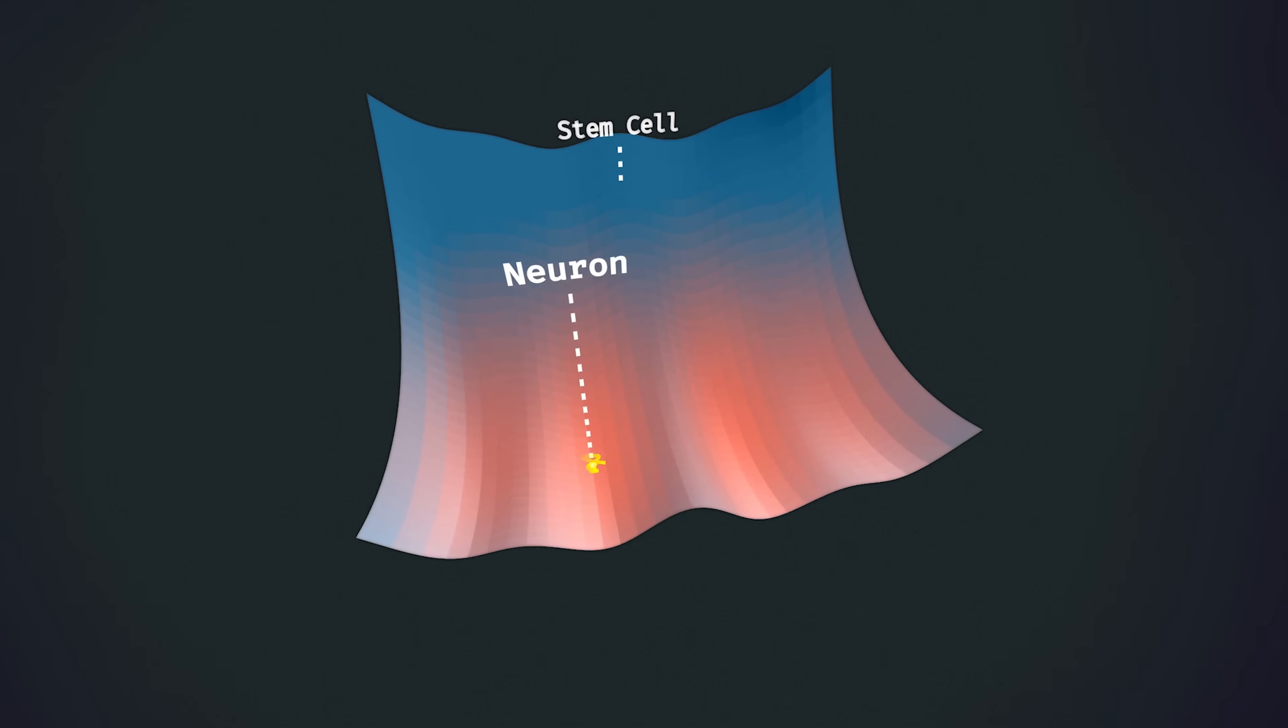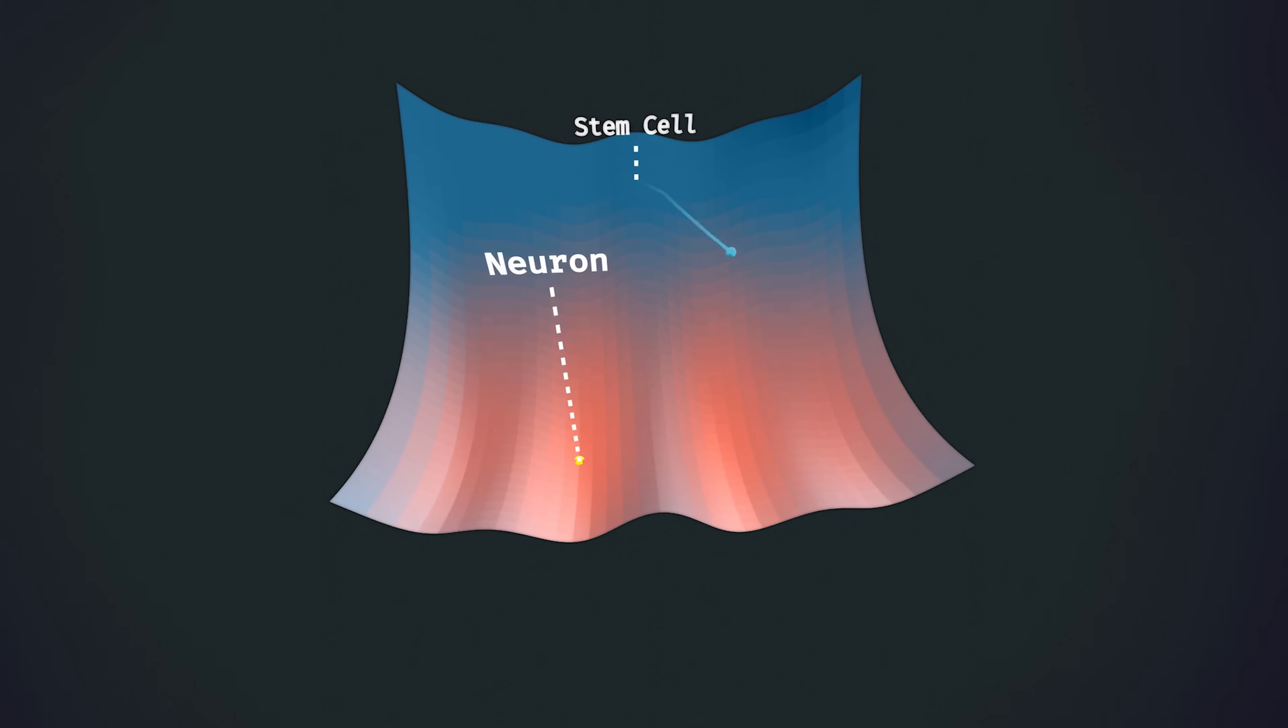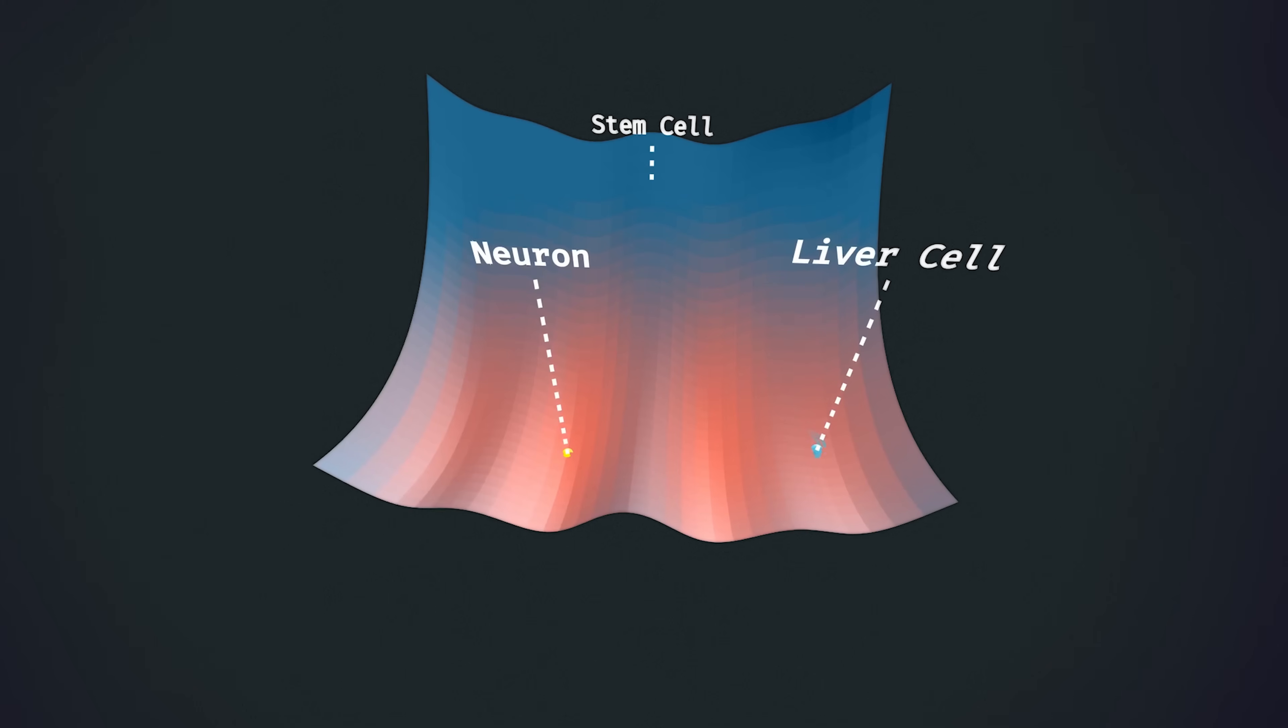For those of you familiar with the area of mathematics called dynamical systems theory, specialised cells are fixed point attractors. On the other hand, pluripotent stem cells end up in vastly different places, depending on the initial conditions, represented here as the initial velocity of the marble.